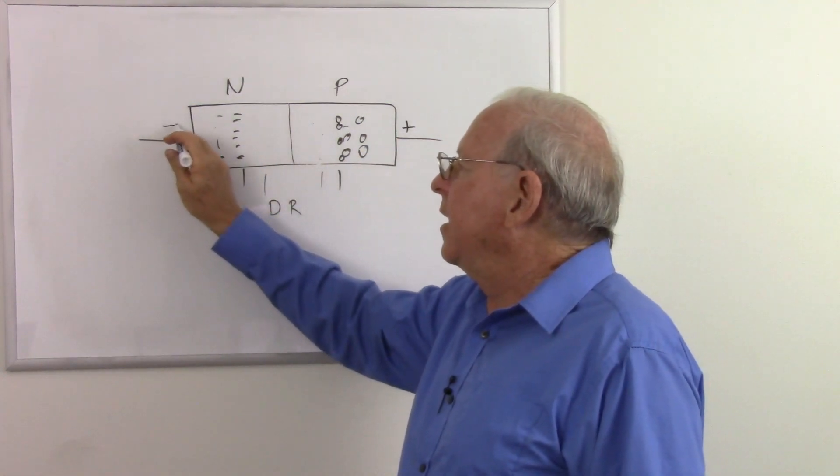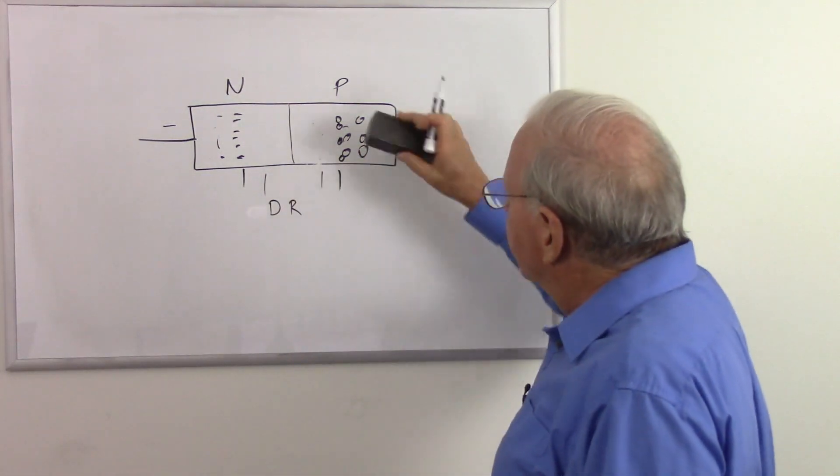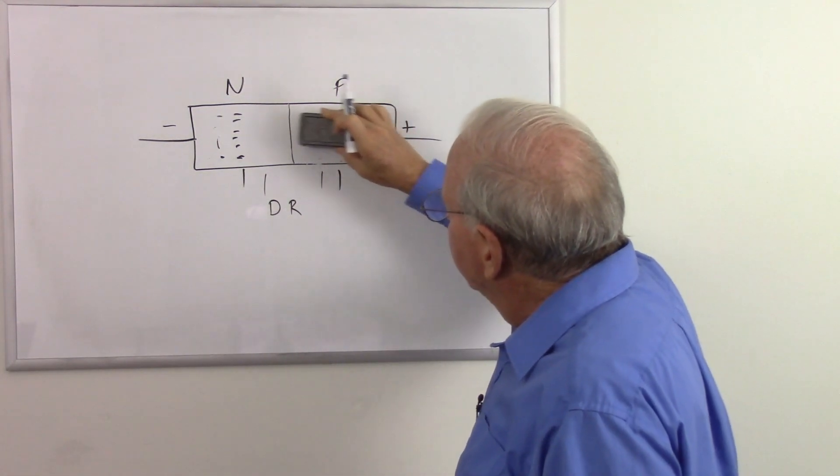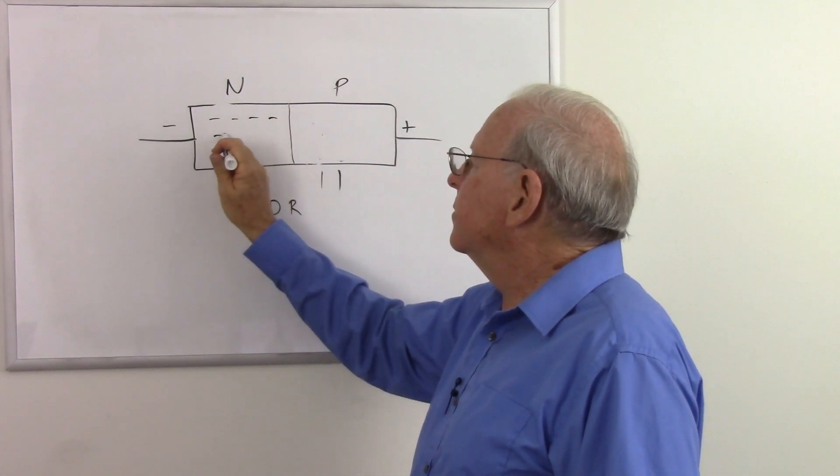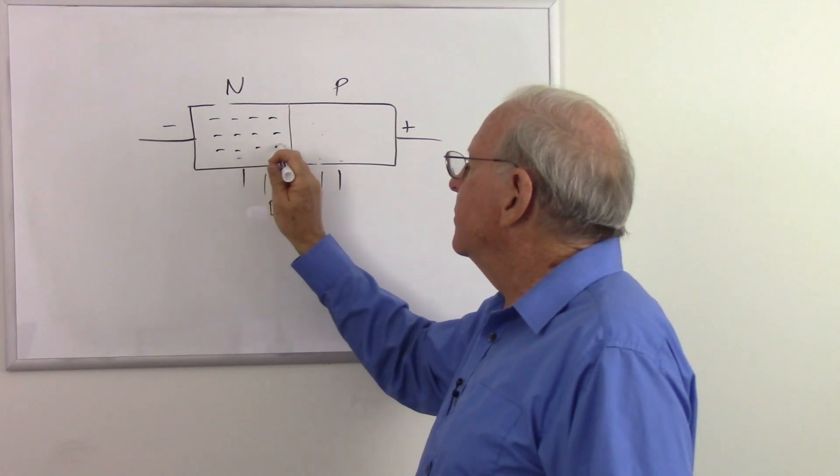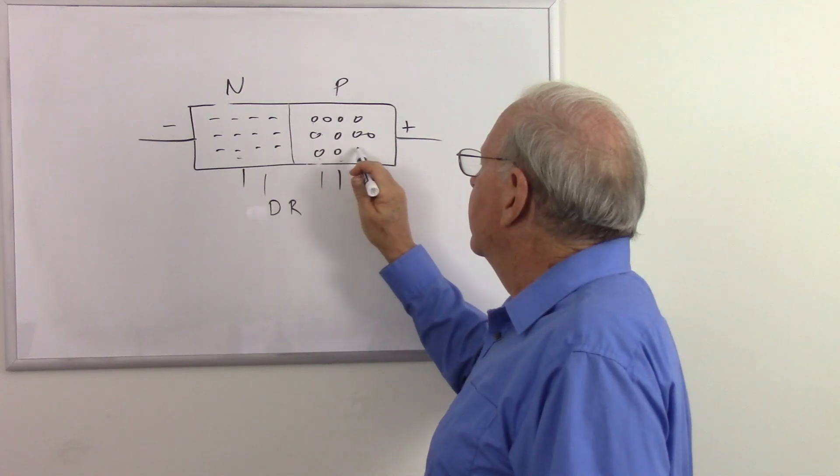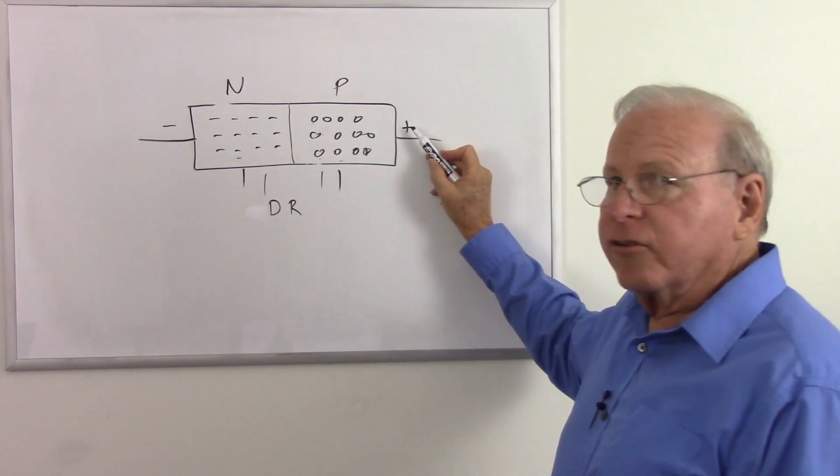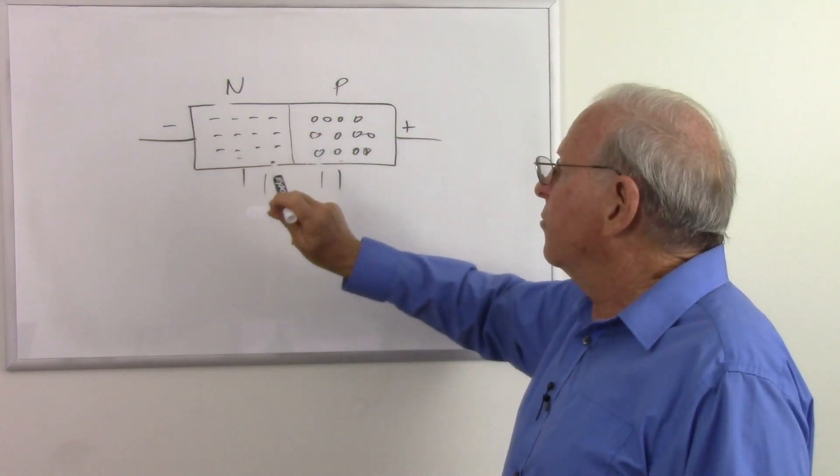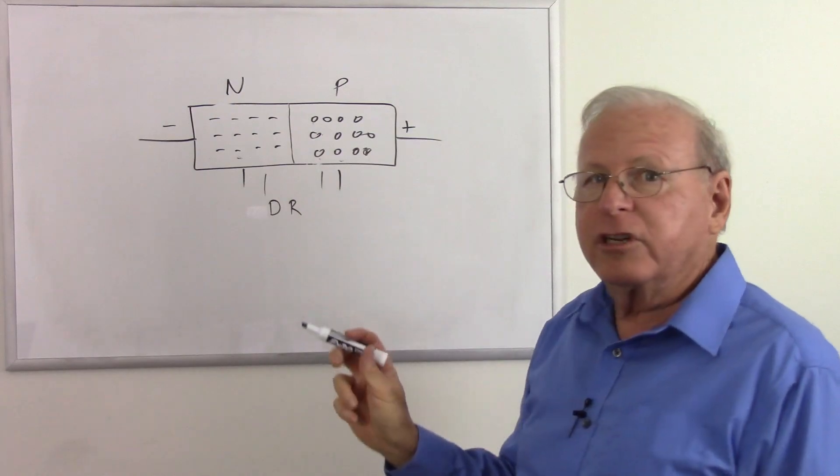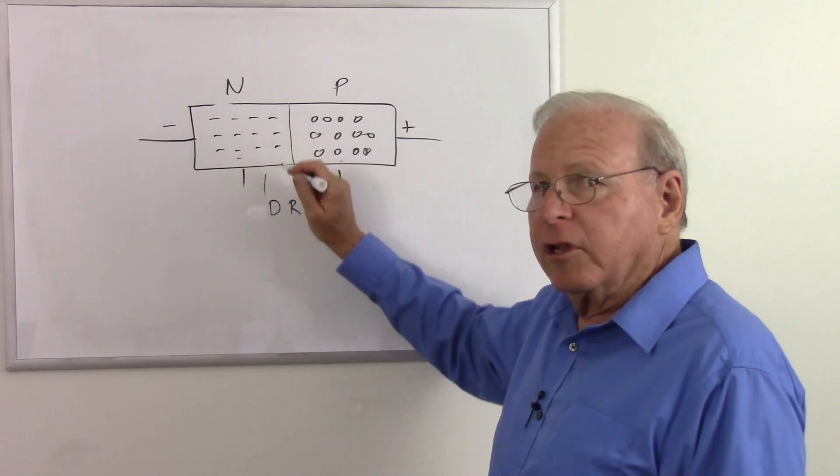Positive on the p-side, negative on the n-side. Of course, that means it goes to a battery. And so what's going to happen is just the opposite. Let me redraw these electrons and holes in here. Well, this positive charge is going to push holes that direction. This negative charge is going to push electrons that direction. So it's going to push them closer to the junction.